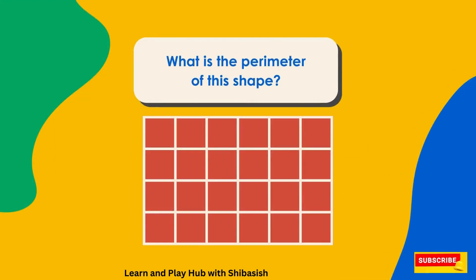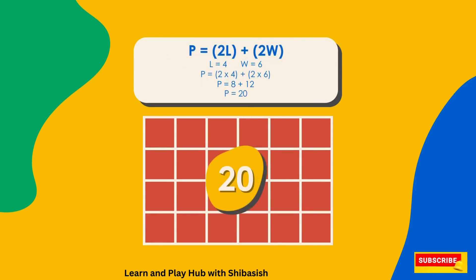What is the perimeter of the shape? The answer is 20. P equals 2L plus 2W. L equals 4, W equals 6. P equals 2 times 4, plus 2 times 6. P equals 8 plus 12. P equals 20.